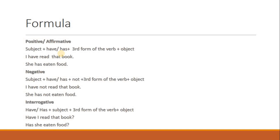Plural subjects — یعنی ایک سے زیادہ، جیسے they, we, یا کوئی دو نام — ان کے ساتھ have use کریں گے۔ You بھی singular اور plural دونوں کے لیے use ہوتا ہے، چاہے ایک بندہ ہو یا دس — you کے ساتھ بھی ہمیشہ have آتا ہے۔ یہ formula اچھی طرح revise کر لیں۔